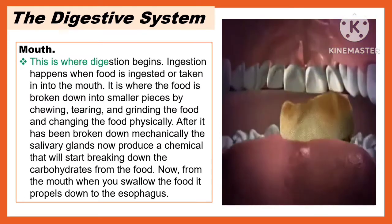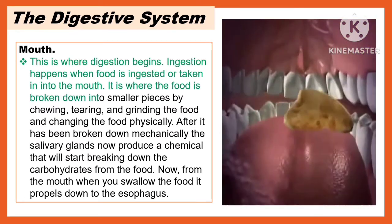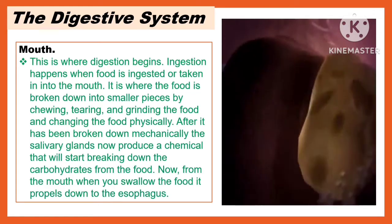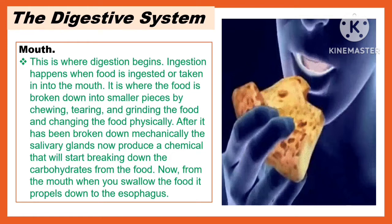The first part of the digestive system is the mouth. This is where digestion begins. Ingestion happens when the food is taken into the mouth. It is where the food is broken down into smaller pieces by chewing, tearing, and grinding the food, changing it physically. After it has been broken down mechanically, the salivary glands produce a chemical that will start breaking down the carbohydrates from the food. When you swallow the food, it propels down into the esophagus.